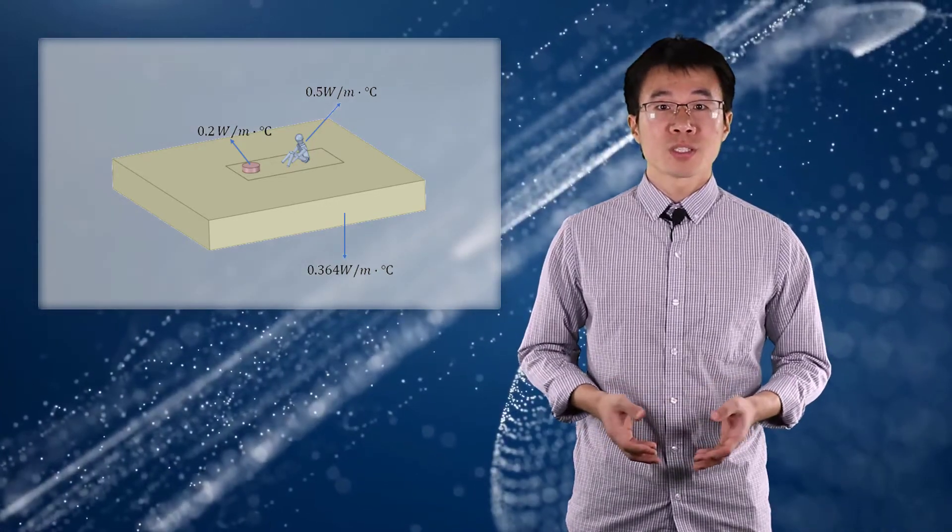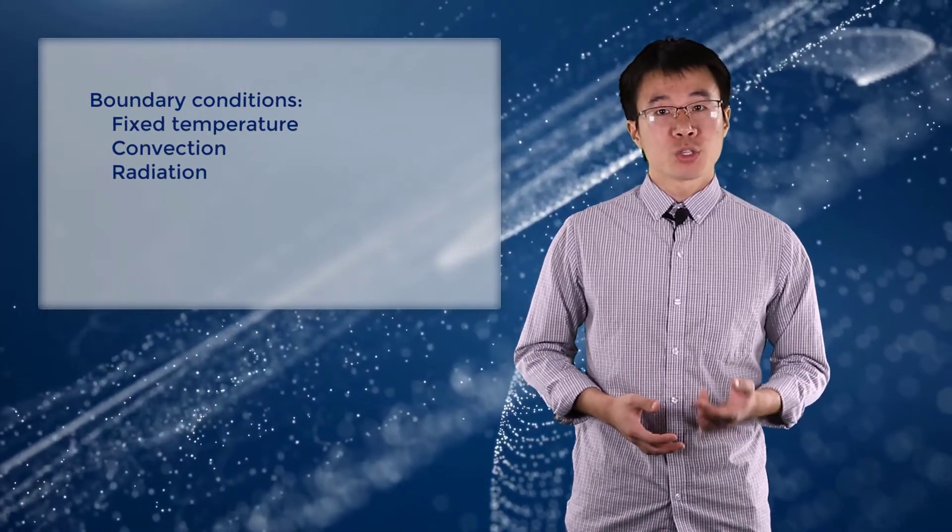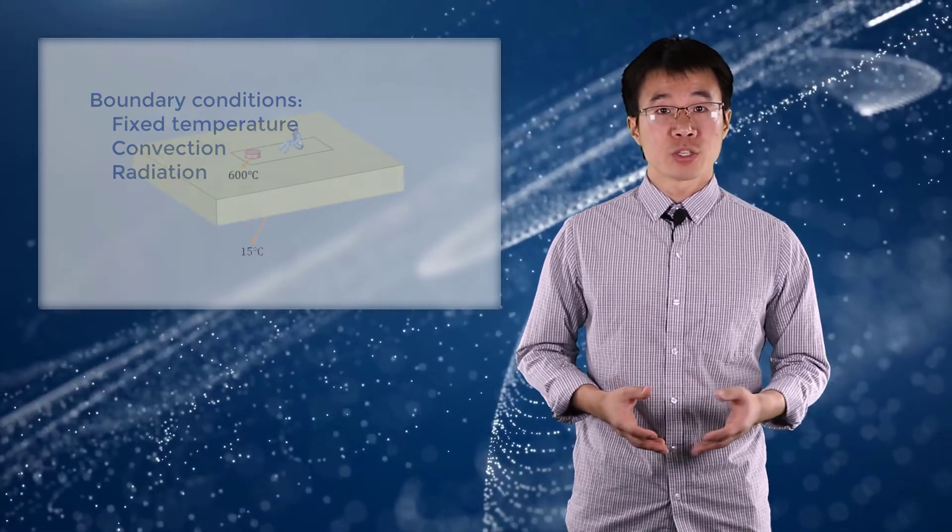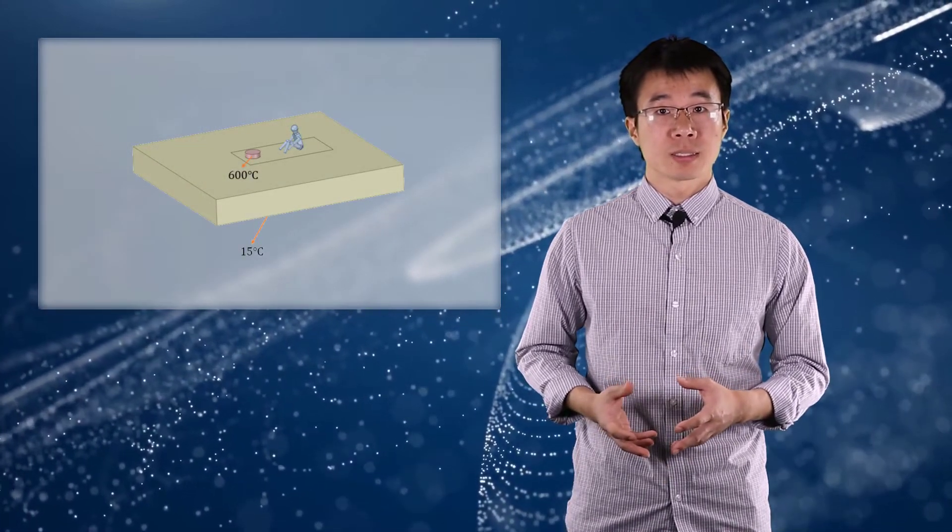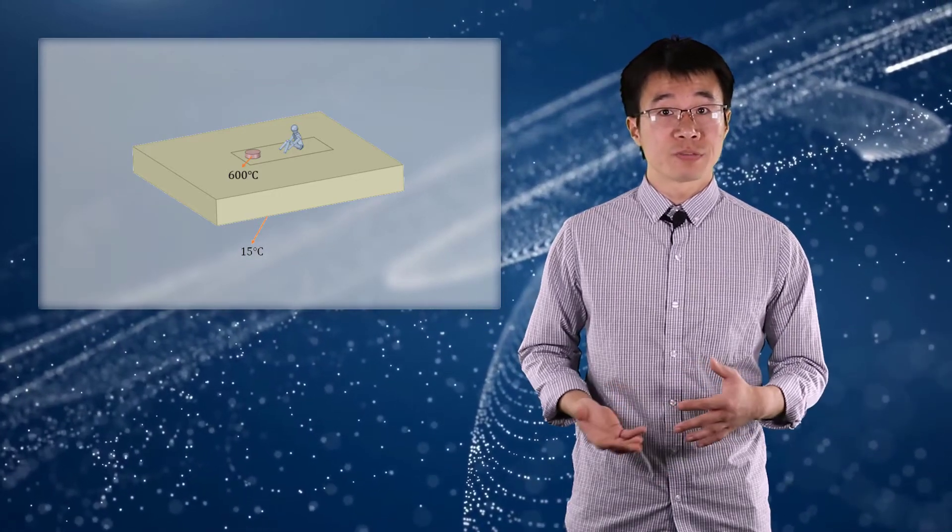The boundary conditions used can be categorized into three types: fixed boundary condition, convection, and radiation. First, a fixed boundary condition is applied to the wood body as 600 degrees Celsius, and the bottom surface of the ground as 15 degrees Celsius.